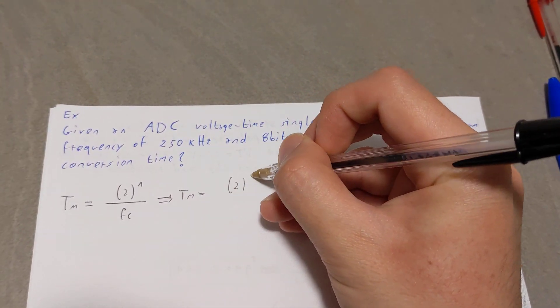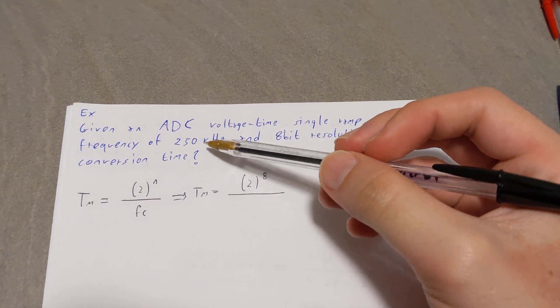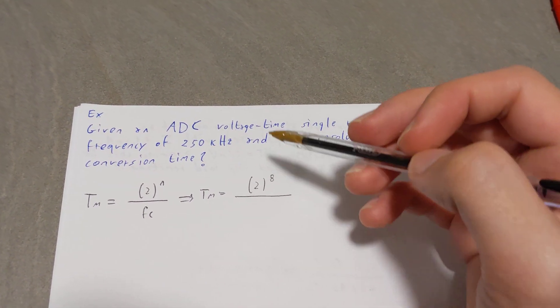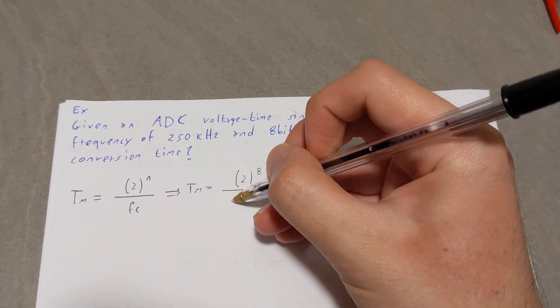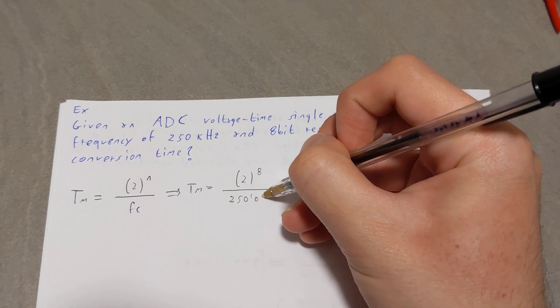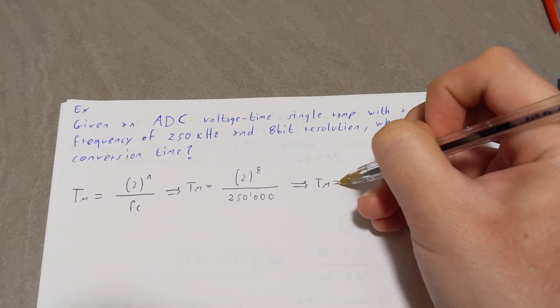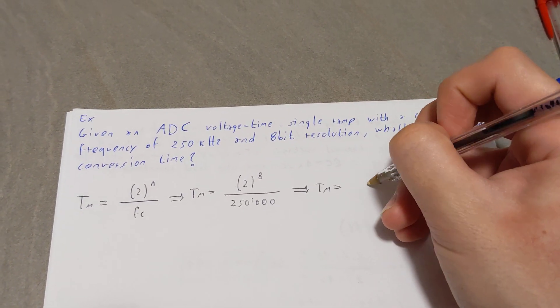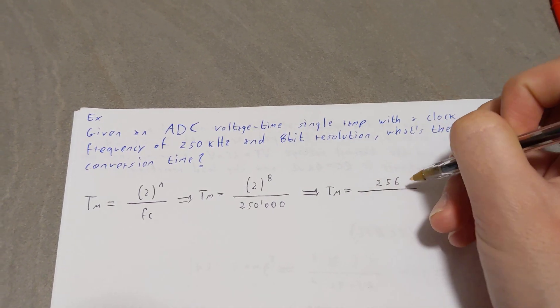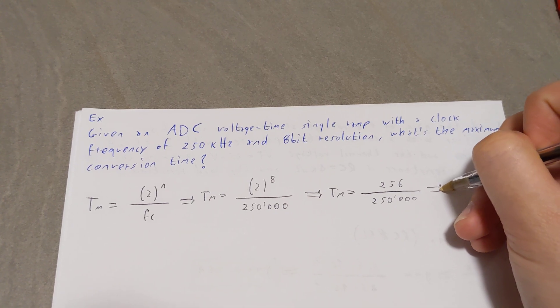So it's going to be 2 to the power of 8 over fc, which is just the frequency. So 250 kilohertz, which is basically 250,000 hertz. So tm is, well, 2 raised to the power of 8 is 256 over 250,000.